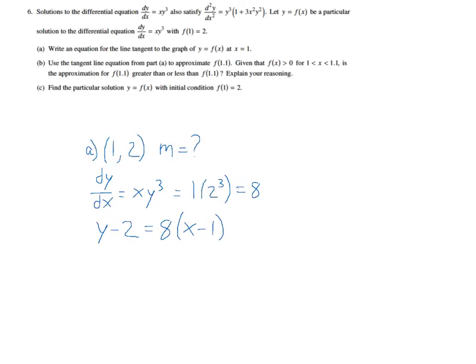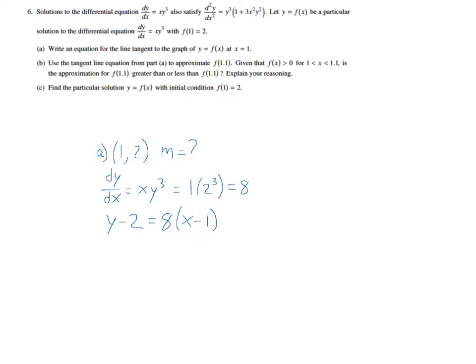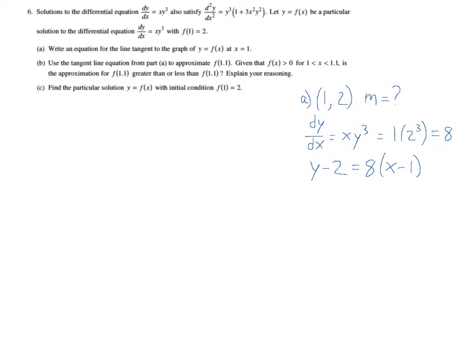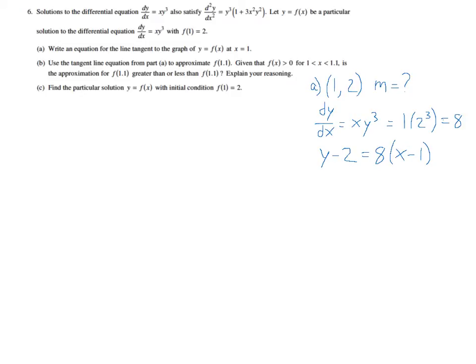So I'm going to shrink that a little bit so I have room for part B. I'm not going to make it go totally away because I might need to use this in part B. So in part B it says use that tangent line to approximate f of 1.1. And that shouldn't be too bad. We just use the exact equation we had there and plug in 1.1 for x. So y minus 2 equals 8 times 1.1 minus 1, which is going to give me y minus 2 equals 0.8. And so y equals 2.8.